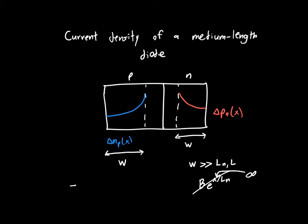Like, let's say that W is 10 microns and Ln is 6 microns. Then we can't say that W is much, much greater than Ln because that's not justified.